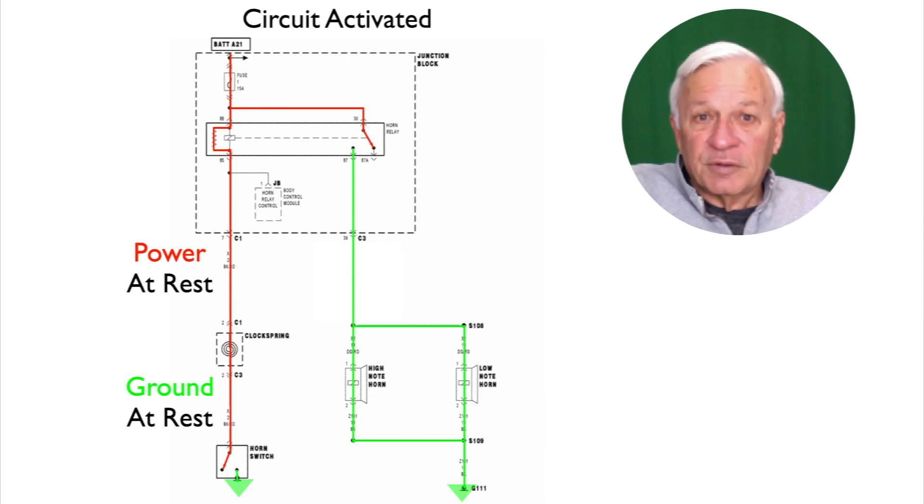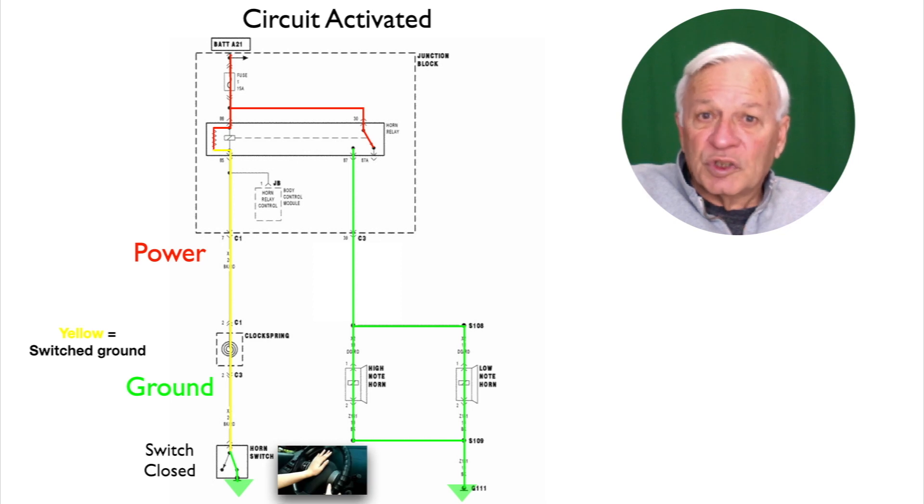Now let's activate this circuit. The mechanical switch closes when you push the horn button. This now allows continuity of ground all the way to the coil, which is inside the relay. I've colored that yellow because it is switched ground.